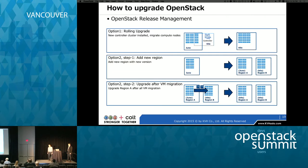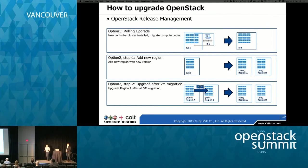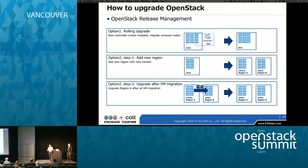For upgrading OpenStack, there are two options. Option one is a rolling upgrade — we stand up a new controller cluster with the newer version and do a rolling upgrade. Option two is having another region with the newer version. Once the new region is up and running and stable, we can migrate compute resources from the current region to the new one. This is more predictable, cookie-cutter design, and recommended.